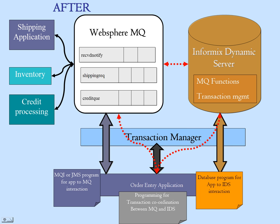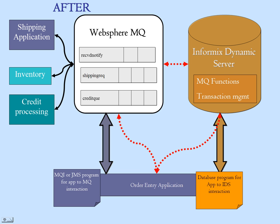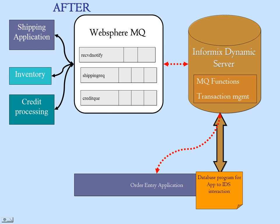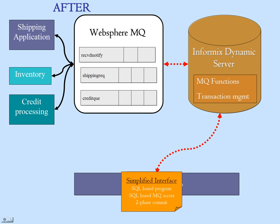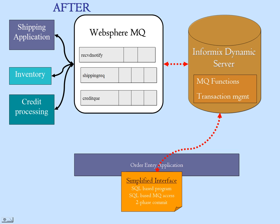Let's look at what happens to the application scenario once we start using the MQ features within IDS. You no longer need the transaction manager because you are using the built-in IDS transaction manager, so the transaction manager interaction modules will go away. Since you can directly communicate between Informix Dynamics Server and MQ through SQL and the set of functions, you no longer need a direct connection to MQ — that module will go away. You only need one connection to the server, and your interaction of IDS database and WebSphere MQ will be simply based on SQL.